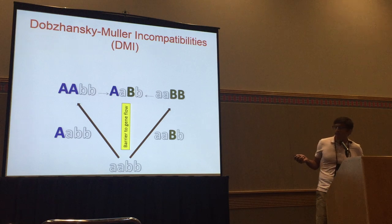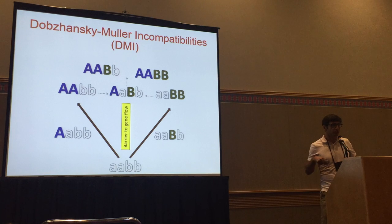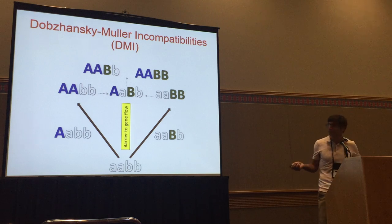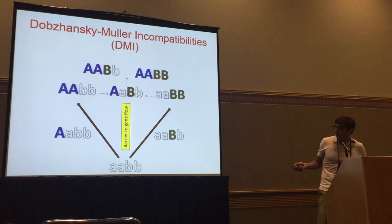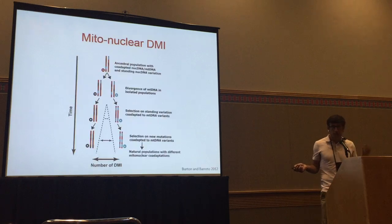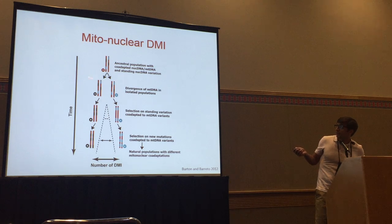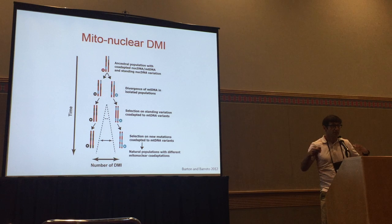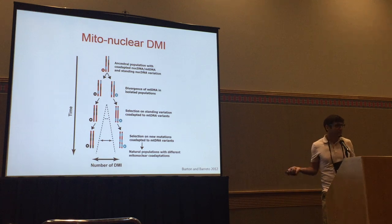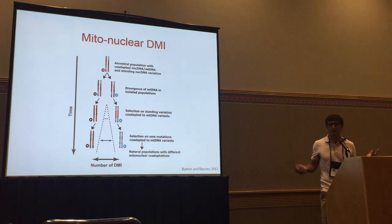A lot of times these incompatibilities are recessive or partially recessive, so you won't necessarily see them in the F1 hybrids, but you do when you do either back crosses or in the F2 hybrids when you get double homozygotes. This model is for nuclear-nuclear interactions, but this can also happen between mitonuclear genes. As populations separate, the mitochondria may diverge, and then the nuclear genes that interact with the mitochondria have to co-adapt. These are what we call mitonuclear incompatibilities, while the ones before are nuclear-nuclear incompatibilities.